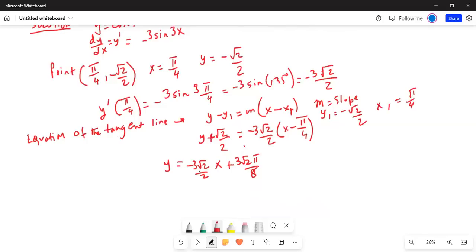And then I move the square root of 2 by 2 which is plus on the left hand side of the equal sign. When I move it to the right hand side, it becomes negative. So this is the equation of the tangent line.